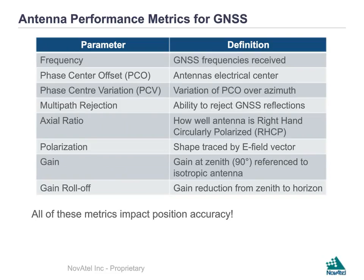The particular metrics we look at when evaluating antenna performance are as follows. First, we look at the frequencies the antenna can support — the bandwidths it can cover, allowing us to receive more GNSS constellations. The second parameter is the phase center offset, which is the antenna's electrical center — specifically, the offset of the electrical center from the physical or geometric center of the antenna. Next is the phase center variation, which is the variation of the PCO over azimuth.